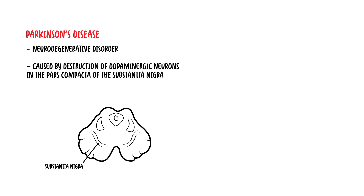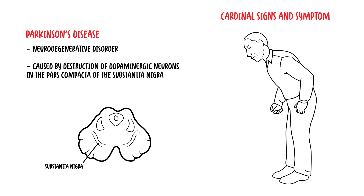It is also part of what's called the basal ganglia system, even though it's not really within that area. As dopamine is a neurotransmitter with an important role in movement and coordination, depletion of dopamine results in the cardinal signs and symptoms of Parkinson's disease. These include resting tremor, bradykinesia, limb rigidity, and postural instability.